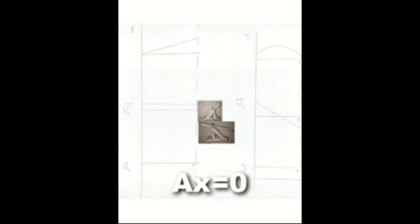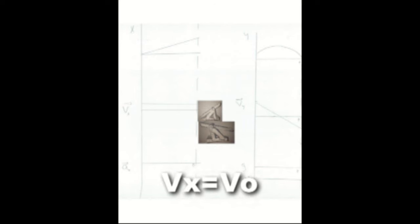The catapult can be modeled in the following graphs. The horizontal acceleration is equal to zero. The vertical acceleration is equal to the negative gravitational field. The horizontal velocity is equal to V-naught. The vertical initial velocity is zero; the vertical final velocity is equal to negative gravitational field times time.